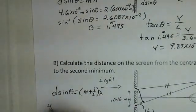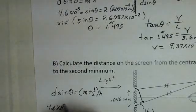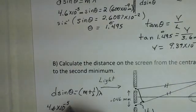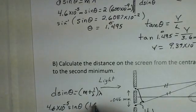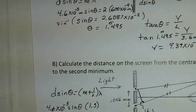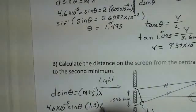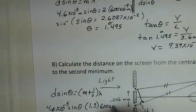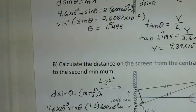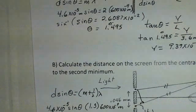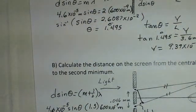We already know d is 4.6 times 10 to the minus 5 meters from part A. We want to calculate this angle again. And we'll have 1.5, or M is a 1, and 600 times 10 to the minus 9 meters. Again, you should pause and do your own calculation.